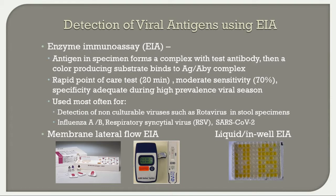Detection of viral antigens using enzyme immunoassay: an antigen in the specimen forms a complex with the test antibody, then a color-producing substrate binds to this antigen-antibody complex. These EIAs provide helpful rapid point-of-care testing with moderate sensitivity around 70 percent. They are most often used for non-culturable viruses such as rotavirus in stool specimens, and are very useful for influenza A/B, RSV, and currently for SARS-CoV-2. There are two general types: membrane lateral flow EIA and liquid in-well EIAs.